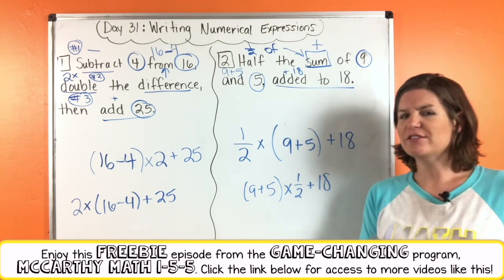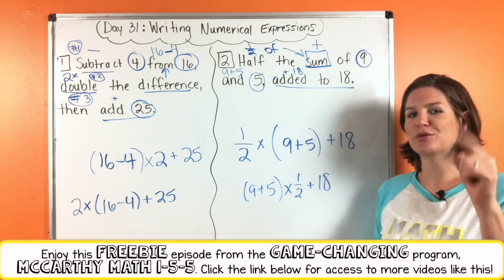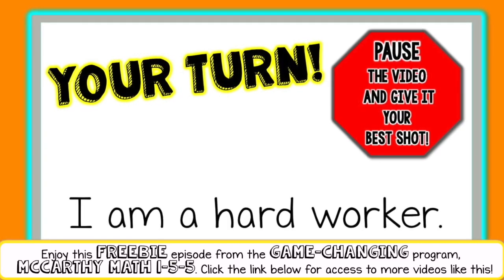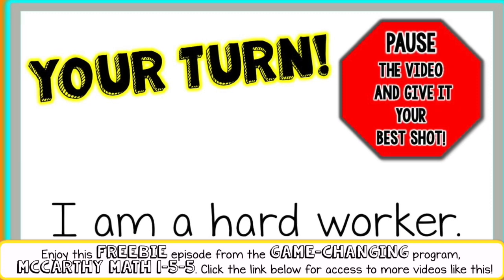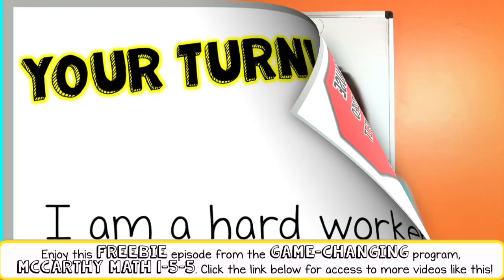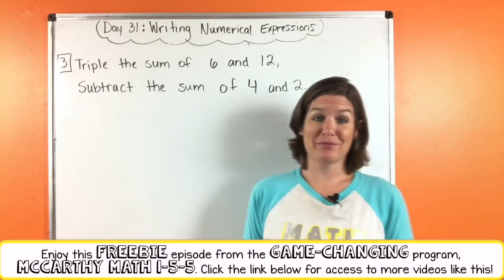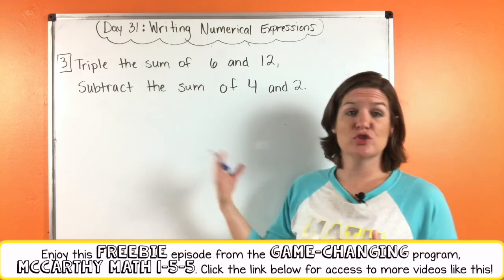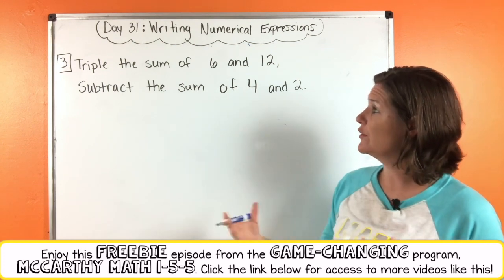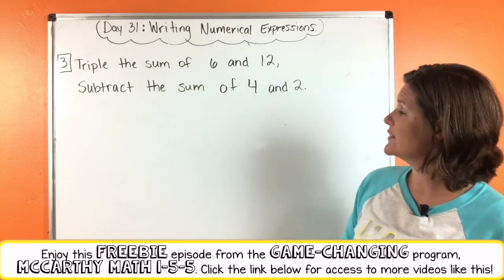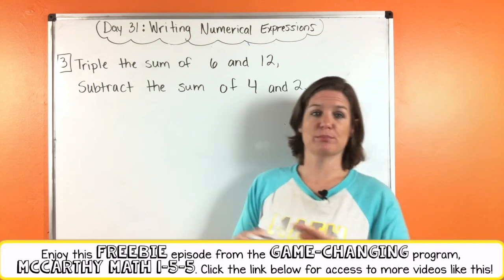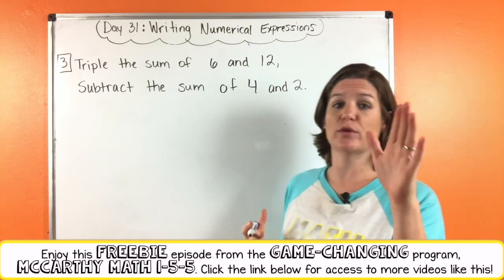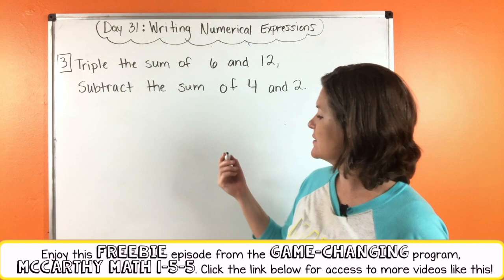Go ahead and give number 3 a try, then come on back when you're ready to check your work. All right everybody, we are back with number 3 — let's see how you did. It says triple the sum of 6 and 12, subtract the sum of 4 and 2. Let's break it down — it seems like a lot at once, but if we break it down, we can make it make sense.